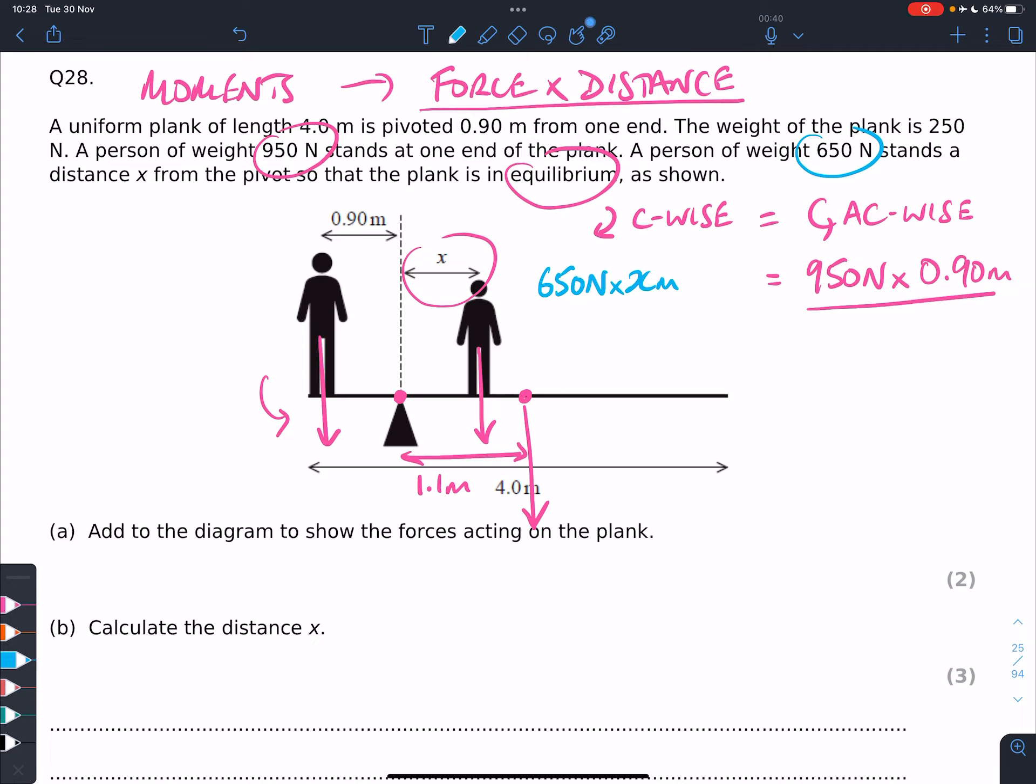And we're going to add another turning force, because it's also in the clockwise direction, due to the plank. And the plank has a weight of 250 newtons, up there, so plus 250 newtons, times, and we do know this distance, it's 1.1 metres, because it's from the centre of the plank to the pivot point.